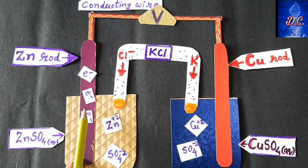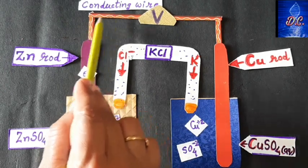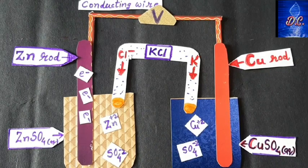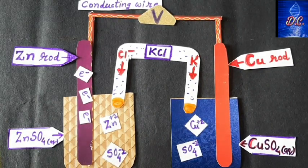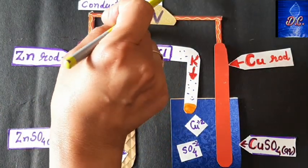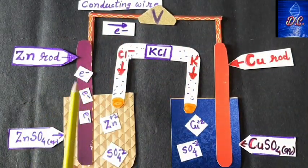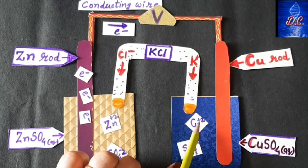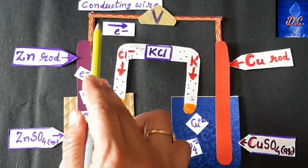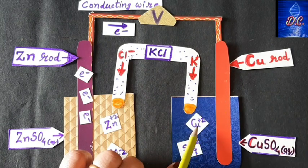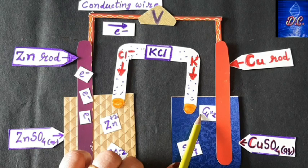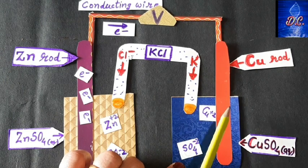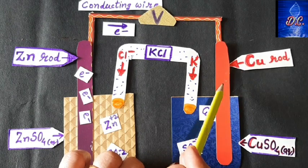When the zinc rod becomes electron-rich, these electrons flow through the metallic conducting wire toward the copper rod. So the direction of electron flow is from the zinc rod to the copper rod. In the copper half cell, the copper ions (Cu²⁺) in aqueous solution gain these electrons and get deposited on the copper rod as copper metal. Since electron gaining (reduction) occurs here, the copper rod acts as the cathode.